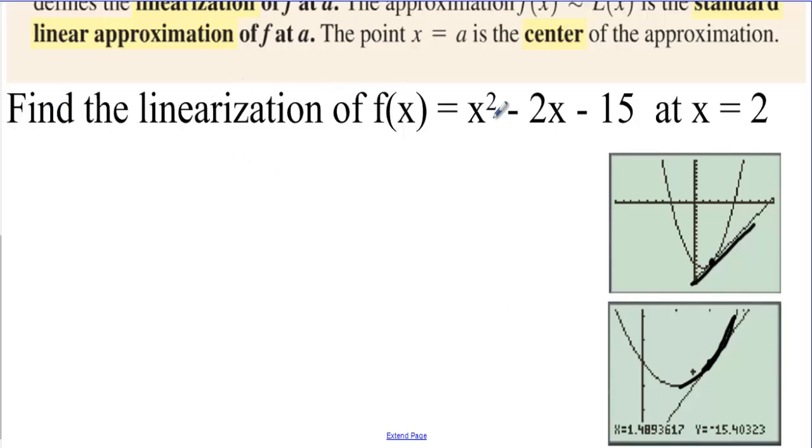Well, in this one, we're asked to find the linearization of f of x equals x squared minus 2x minus 15 at x equals 2. Let's find the point, so we have 2 comma something, 4 minus 4 is 0, and then we have negative 15.